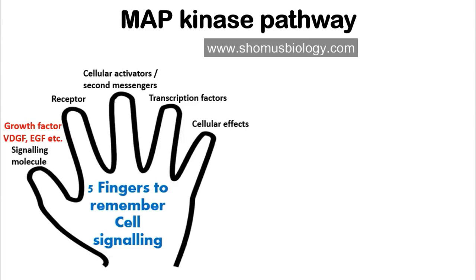The receptor for the MAP kinase pathway is always a Receptor Tyrosine Kinase — these are enzyme-linked receptors where the receptor itself is linked with kinase activity, so the receptor can phosphorylate other proteins inside the cell and initiate a cascade of cell signaling. The specific receptor names are EGFR and FGFR — not GPCR. If the signaling molecule is EGF, the receptor is EGFR; if it's Fibroblast Growth Factor (FGF), the receptor is FGFR.